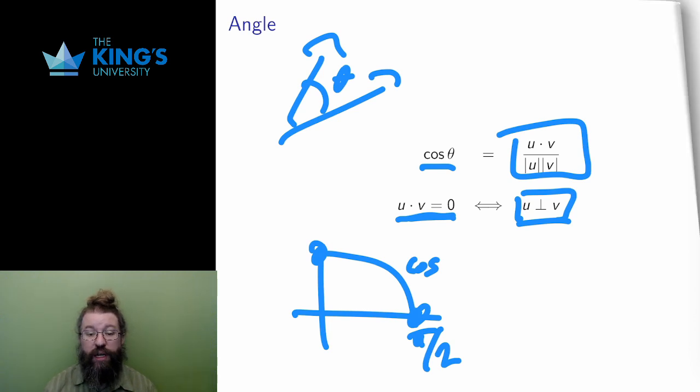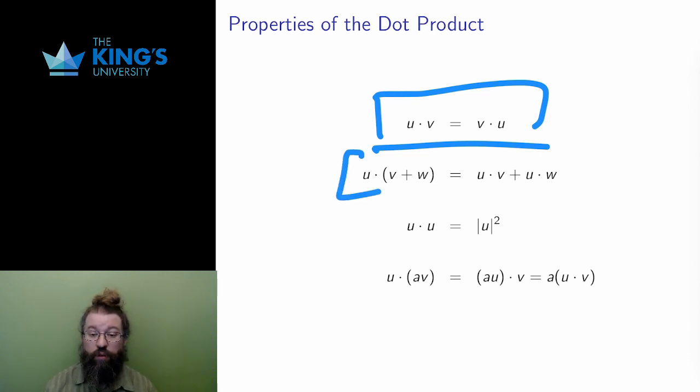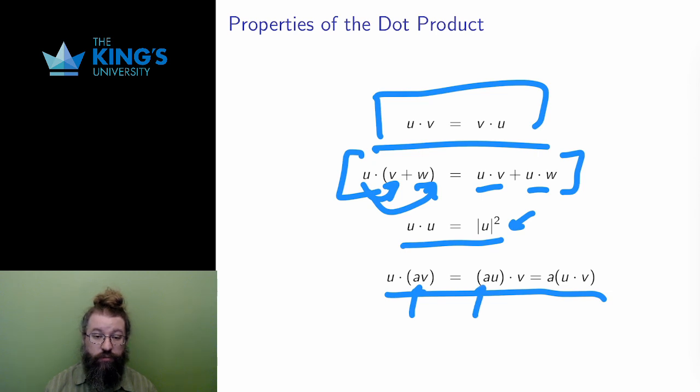Let me review the algebraic properties of the dot product as well. The dot product is commutative. That means the order doesn't matter, u dot v is the same as v dot u. The dot product is distributive over vector addition. This is the reason it is called a product, because it acts like multiplication in this distributive law. The dot product of a vector with itself produces the square of the length of that vector, which turns out to be a convenient piece of algebra to work with. Finally, if there is a scalar multiplication anywhere in a dot product, on either vector that is, then the scalar can be pulled out and multiplied after the dot product is finished.